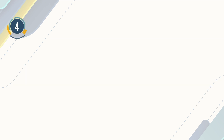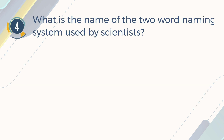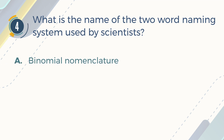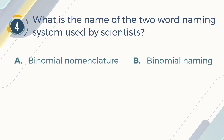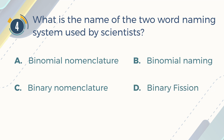Number 4. What is the name of the two-word naming system used by scientists? A. Binomial nomenclature. B. Binomial naming. C. Binary nomenclature. D. Binary fission.